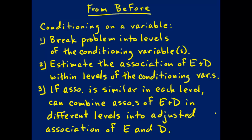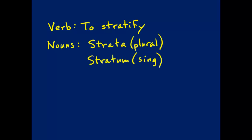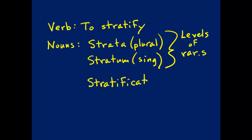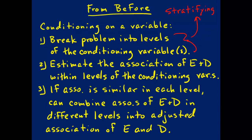The first part of this process — where we break the problem into levels of the conditioning variables — has a technical term: this is called stratifying. The verb form is to stratify. The nouns include strata, which is plural, and stratum, which is singular. Strata and stratum refer to the different levels of the conditioning variables. Another noun is stratification, which refers to the act or the process of stratifying.